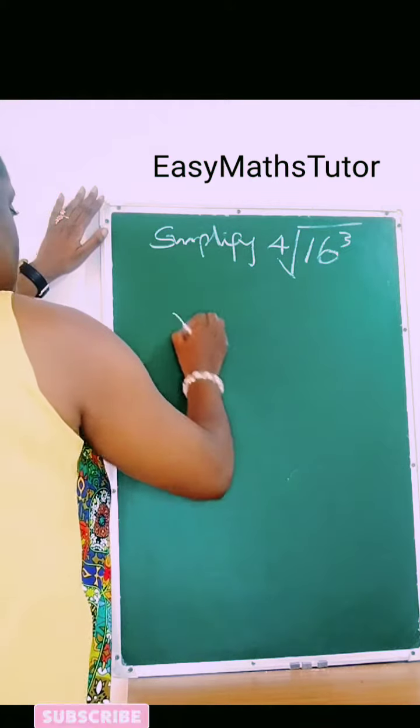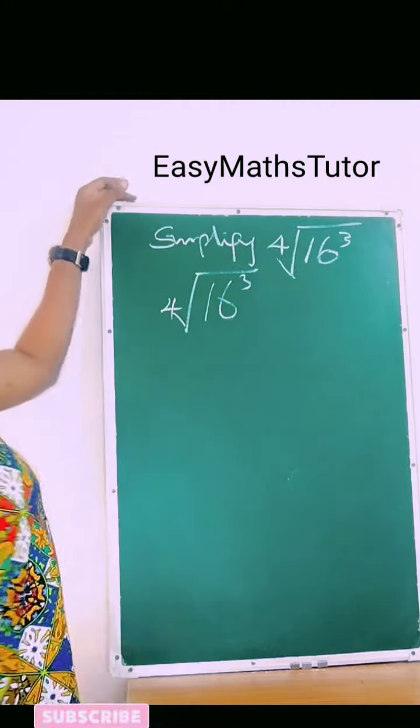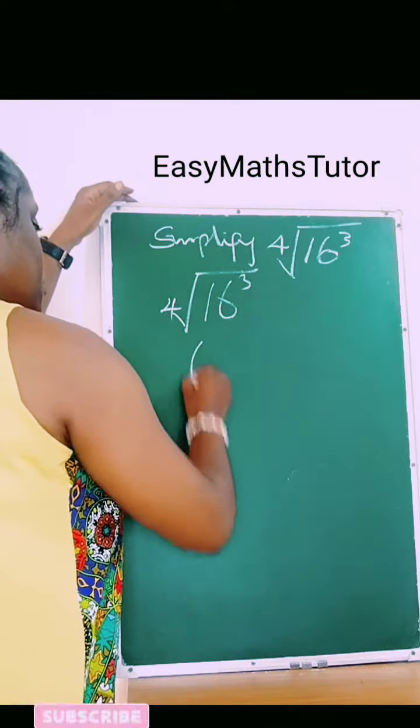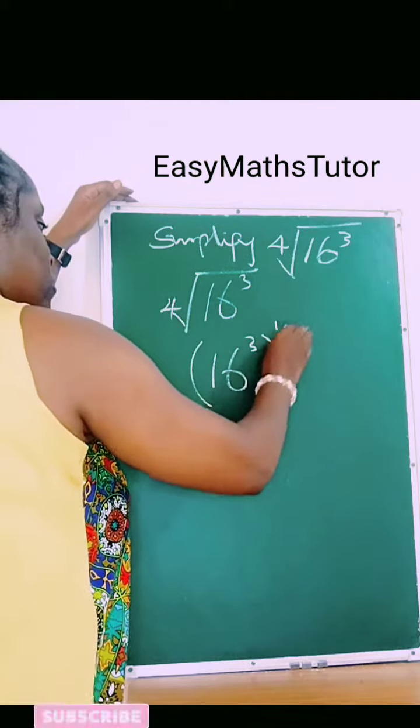We'll rewrite it, that is, 16 raised to power 3, root 4. So we're going to change it to brackets, 16 raised to power 3. This becomes 1 over 4, all right?